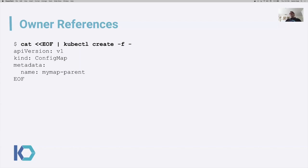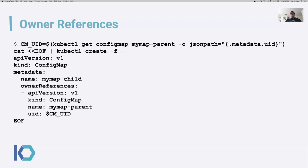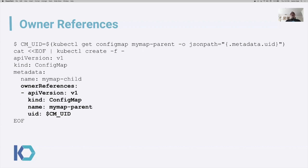I'm going to show you a quick example of owner references and how they work, starting with a really simple example and then working into progressively more complex examples. Here I'm going to create my parent object first. Since the references are from child to parent, I have to create the parent first, and then I can go ahead and create the child. I have to do some shell foo to get the UID out of the parent and include it in the child. You can see that we have a very simple config map that contains an owner reference to its parent. An owner reference consists of a name and a UID. Owner references have to be within the same namespace, so you'll never see a namespace on an owner reference, but there does have to be the object name and UID for that reference to work.